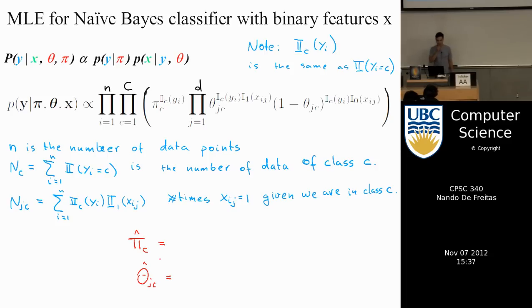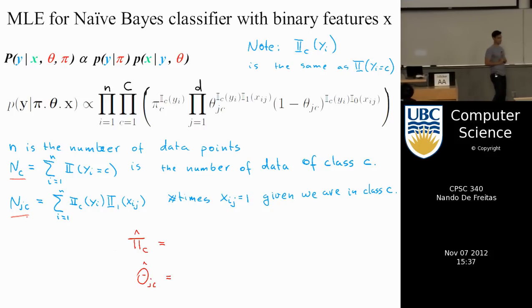So in particular, I'm going to do the following thing. I'm going to define, so n is the number of data points. I'm going to introduce two more indices, two more summaries. One is going to be the number of points of class C. In other words, the number of positive tweets and the number of negative tweets. So n_c is just the sum over all the tweets and you count how many times y was of class C. We're also going to count the number of times the tweets were of class C and a particular word was on. So how many times did the word Viagra occur in the positive class and how many times did the word Viagra occur in the negative class? That's n_{jc}.